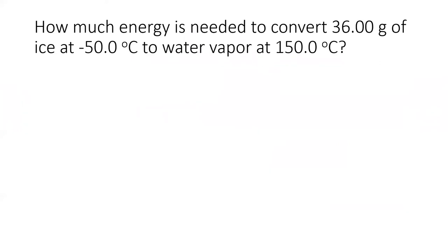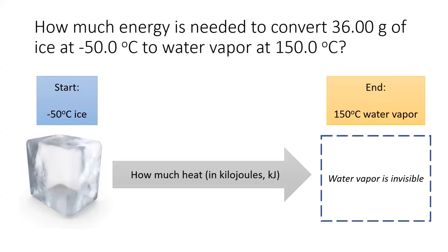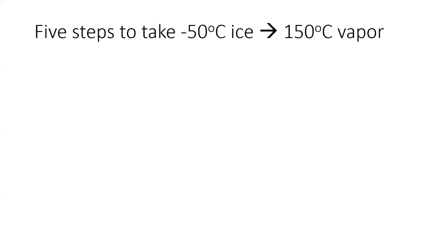To demonstrate this concept, we'll do an extended practice problem. To answer the question, how much heat would it take to turn very cold ice at negative 50 degrees to very hot water at 150 degrees? But before we do any math, let's break apart what is happening in this problem. Specifically, there are five processes which occur.